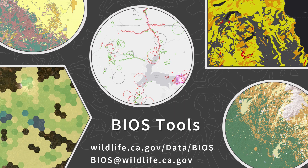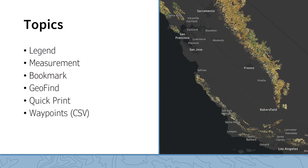In this session, we will cover where to find and how to use several commonly used tools in BIOS. We will cover the following tools: Legend, Measurement, Bookmark, Geofind, QuickPrint, and Waypoints.